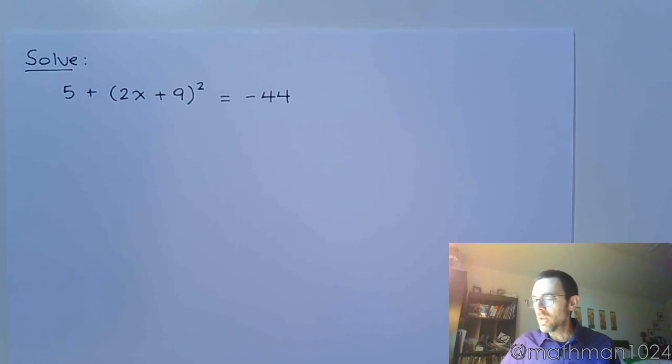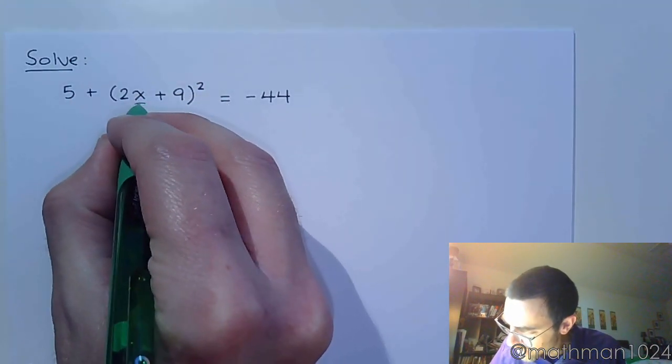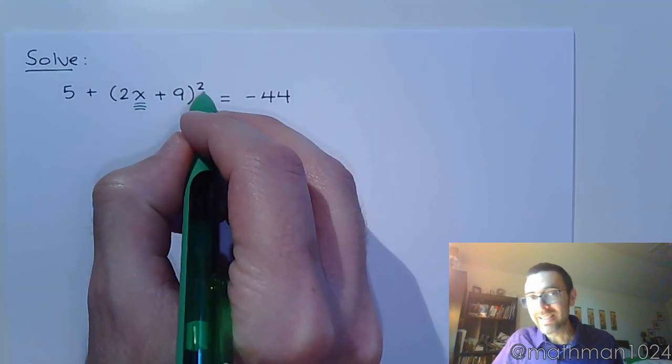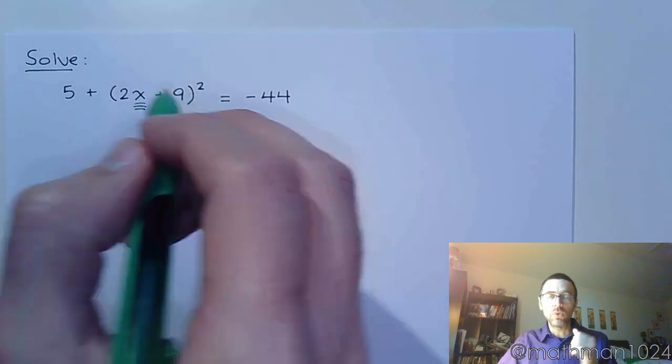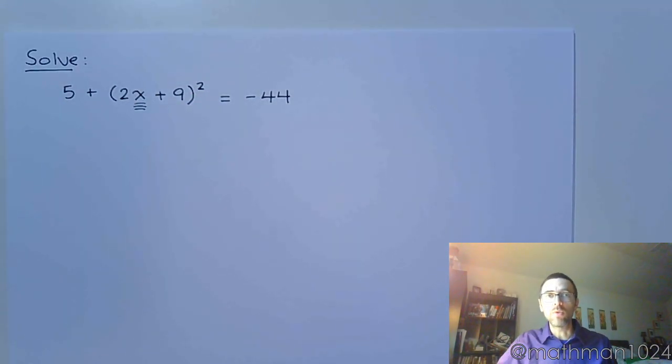The first thing you always want to look for is the square root property. Can we use that? When there's only one instance of the variable and that's contained inside of a square, that's the big clue for you to use the square root property.